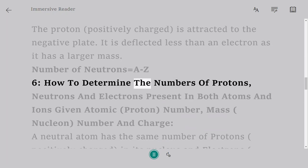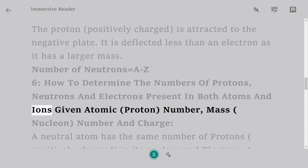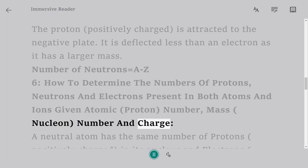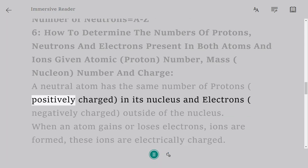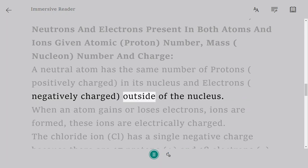6. How to determine the numbers of protons, neutrons and electrons present in both atoms and ions given an atomic (proton) number, mass (nucleon) number and charge. A neutral atom has the same number of protons, positively charged, in its nucleus and electrons, negatively charged, outside of the nucleus.